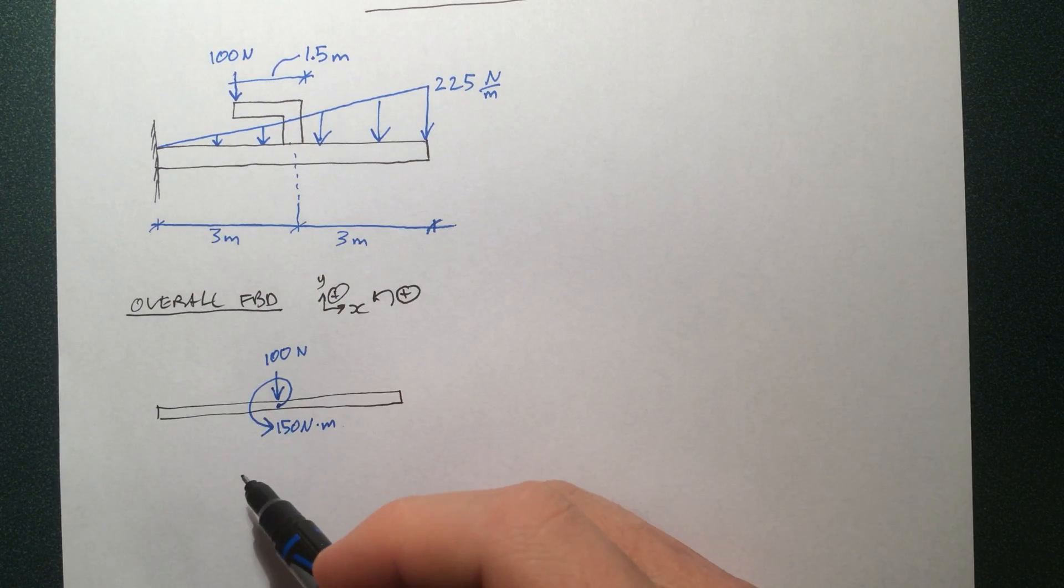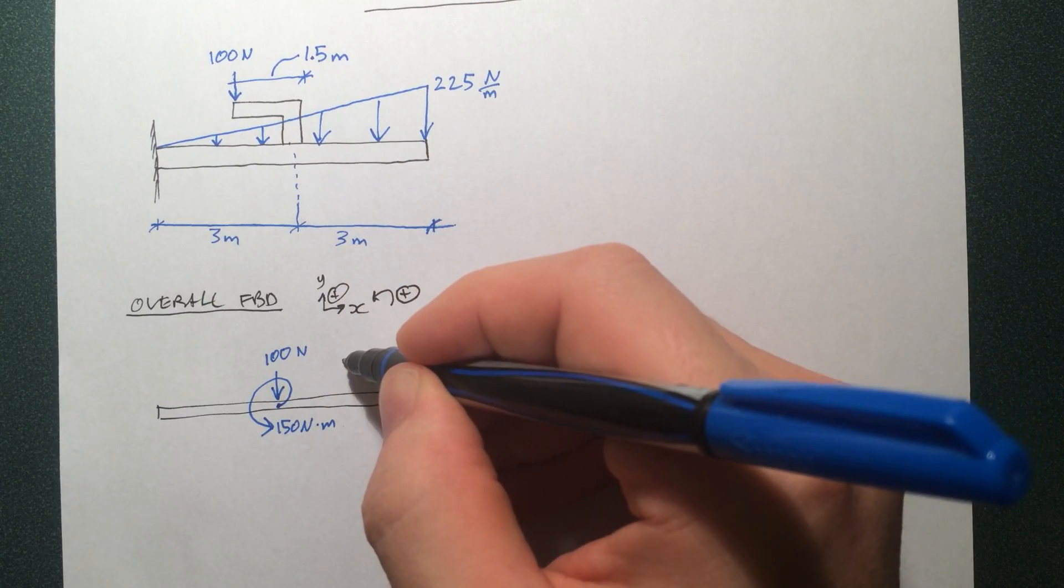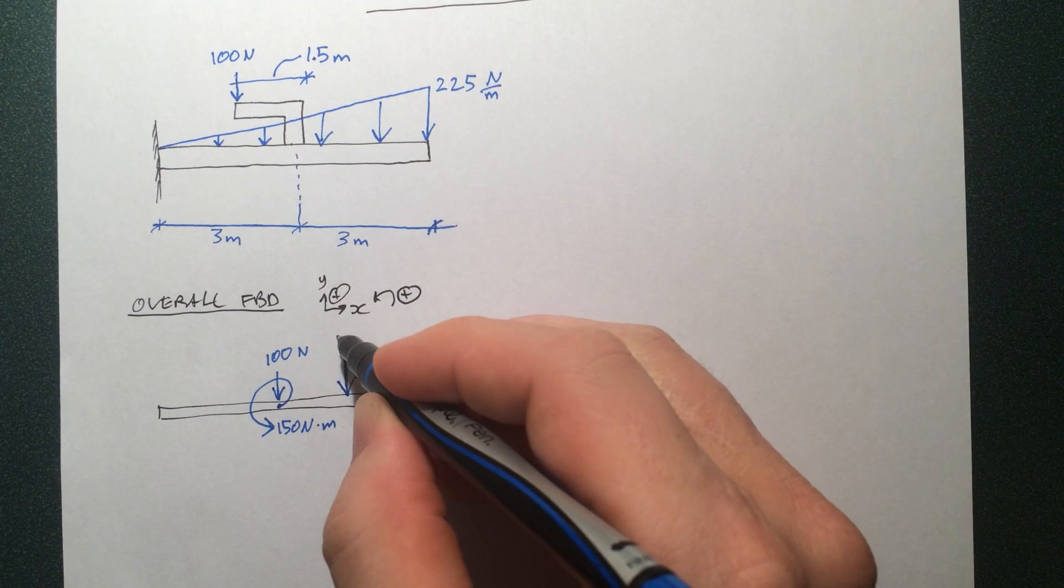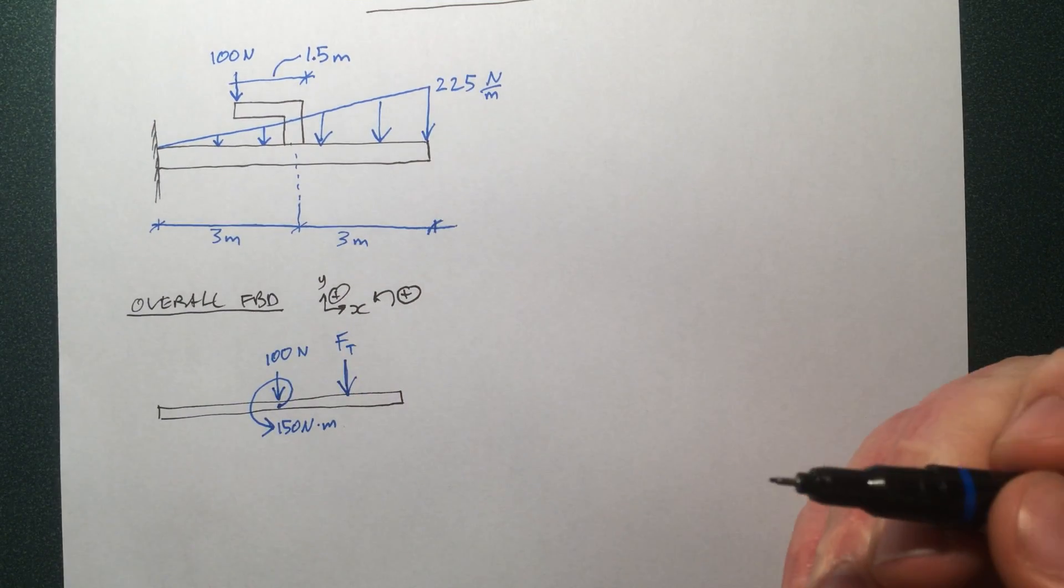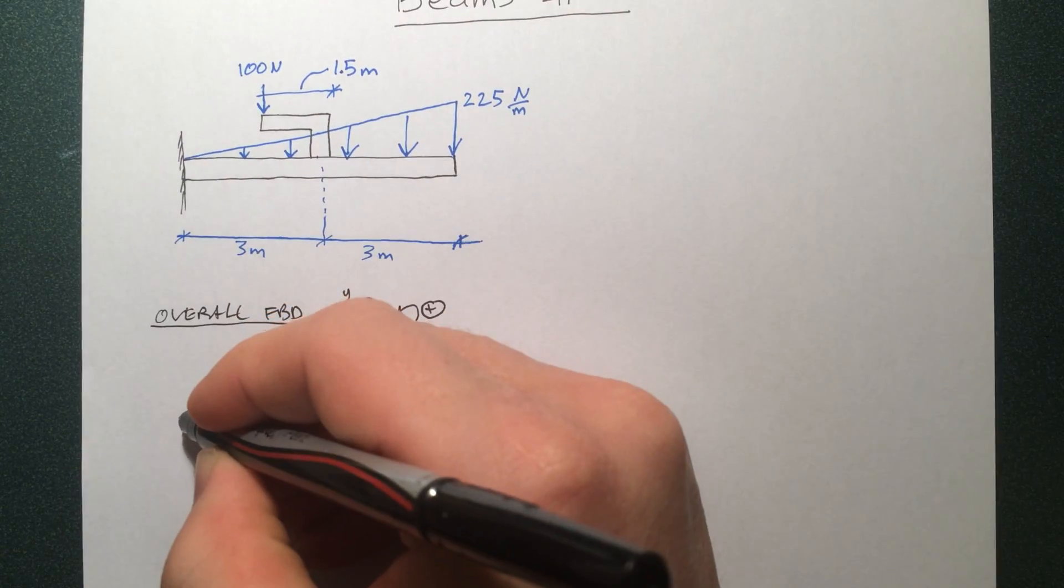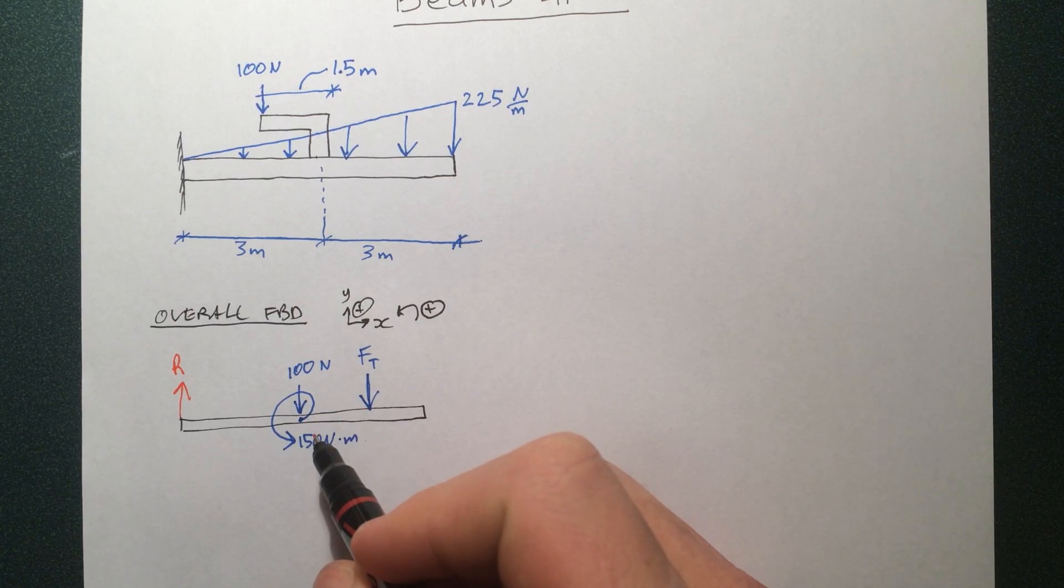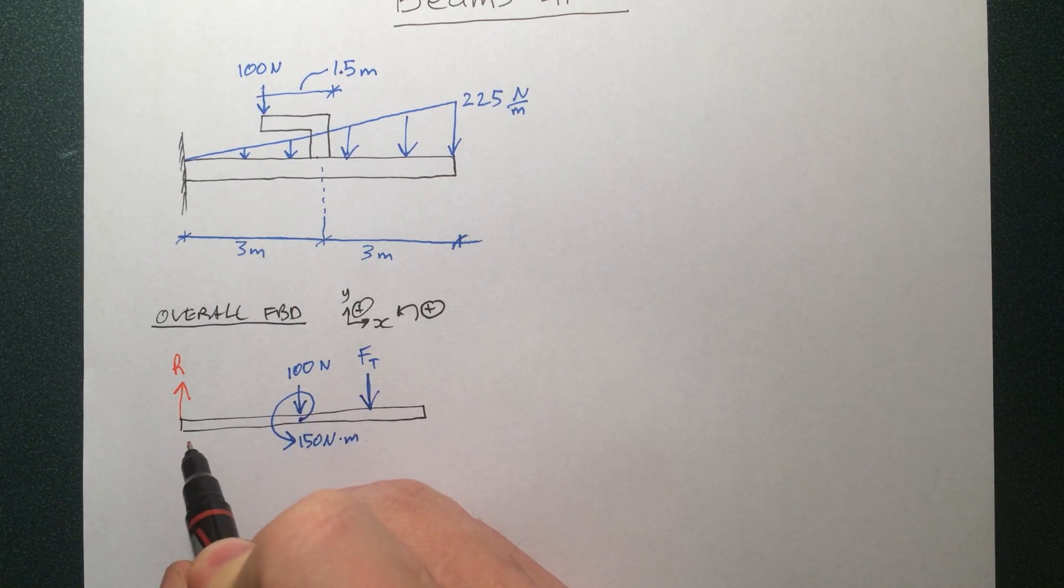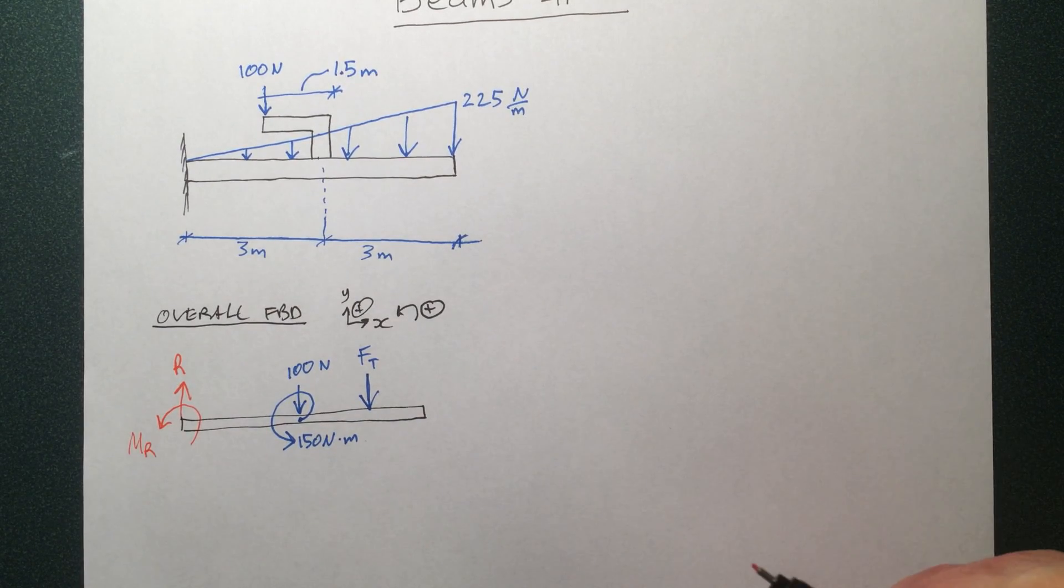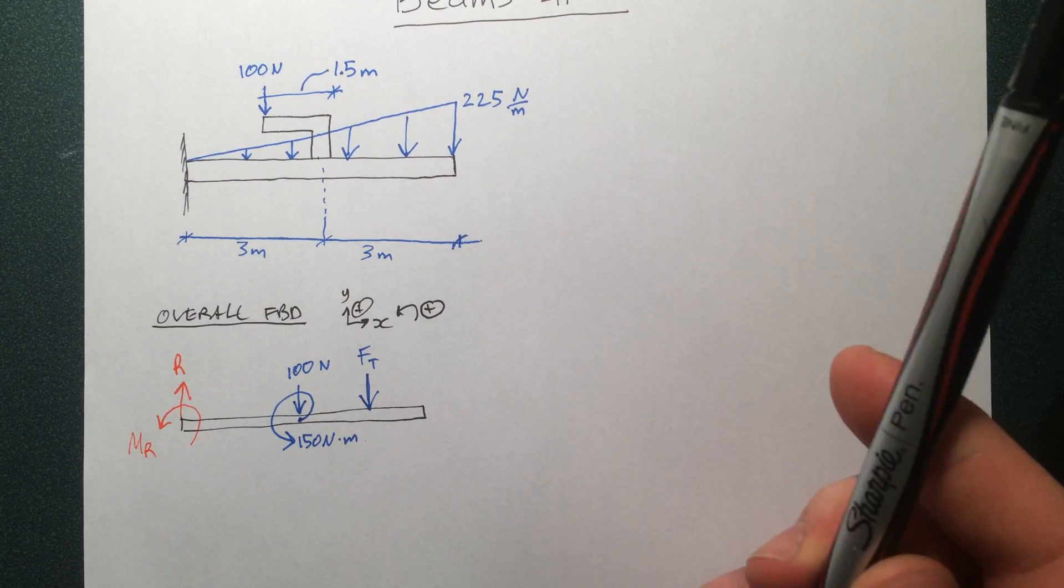And then we have a few more things happening here. This distributed load is giving us some sort of loading out here. We'll just call it force from the triangular loading. And then, of course, we have some reactions. So you can imagine the most obvious one is just a reaction here. So, we're resisting these forces, and we're also going to have a moment reaction. So just draw that in positive. And that's it. That's all our forces we have.